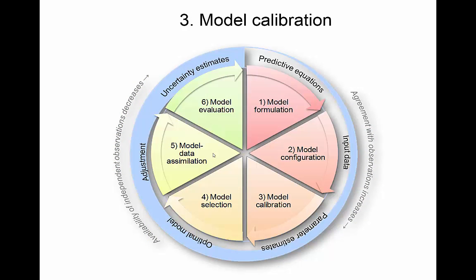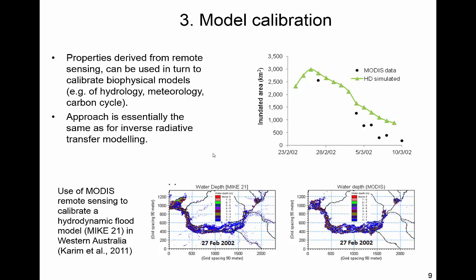The third step where you can use satellite data is actually calibrating your model. If you can infer something from your remote sensing that you want to know as an output of your model, you can compare your model outputs to the satellite observations and tweak things in your model until you get good agreement. Here's an example where the black dots show the inundated area for a river reach in Western Australia, and the green line shows what the model thinks is inundated. You can tweak the model parameters to tune it until you get closer agreement between the two. This is very similar to inverse radiative transfer modeling — you optimize by tweaking parameters to maximize agreement with the observations.